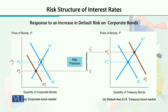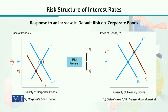The equilibrium price in the corporate bond market is P1C. In Panel B, showing the default-free US treasury bond market, the blue D1 curve is the initial demand curve and the blue supply curve is the initial treasury bond supply. The intersection of the two curves shows that the equilibrium price in the default-free US treasury bond market will be P1T — T stands for treasury and C stands for corporate bonds.